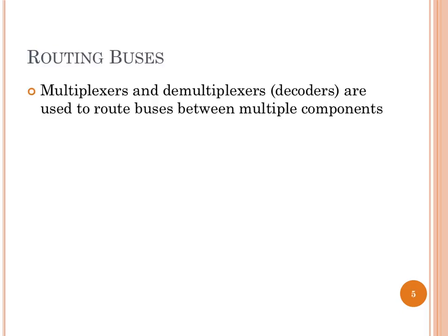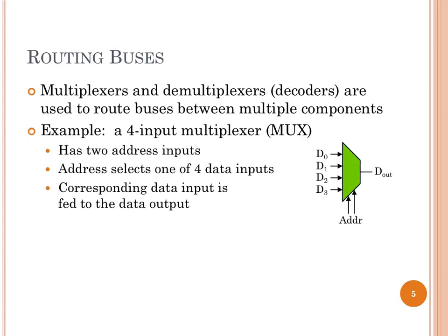We sometimes need to route signals to different places based on control inputs, using multiplexers and demultiplexers. In a four-input multiplexer, we have four data inputs D0 through D3, and two address inputs that select which data input appears on the output. We need two address lines because two squared is four — we can have 00, 01, 10, or 11 to select one of the four inputs. A demultiplexer is the reverse: one input routed to one of N outputs based on address inputs.